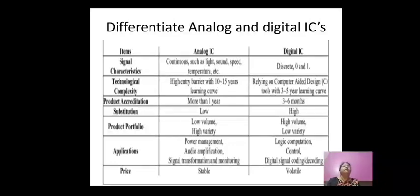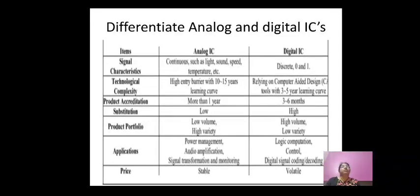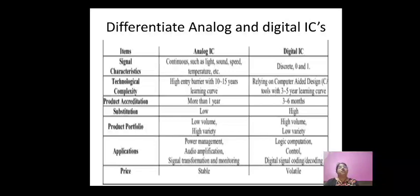An important exam topic: differentiating analog and digital ICs. Signal characteristics — in analog ICs, the signal is continuous; the amplitude of an analog signal varies with time. In digital ICs, the signal is discrete, with amplitude having only two values: high or low, i.e., one or zero.